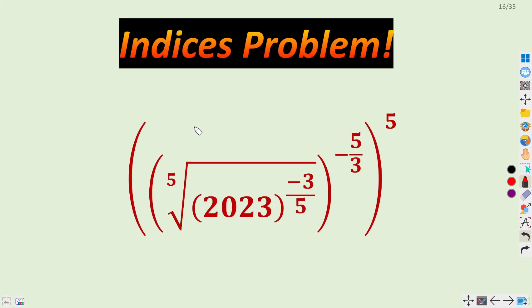Hey everyone, in this video we will discuss an indices problem. The question says fifth root of 2023 raised power minus 3 by 5, whole raised power minus 5 by 3, and whole raised power 5. So we have to simplify this indices problem.